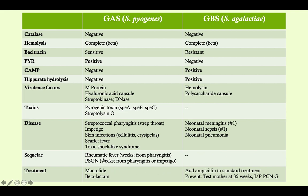For group A strep, sequelae include rheumatic fever — a type 2 hypersensitivity reaction due to M protein, occurring within weeks and only caused by pharyngitis. Remember: you only have one heart, so there's only one cause. Post-streptococcal glomerulonephritis is a type 3 hypersensitivity reaction due to immune complexes depositing in the glomerulus, causing cola-colored urine and facial puffiness. It's self-limited, occurs within weeks, and since you have two kidneys there are two causes: pharyngitis or impetigo.